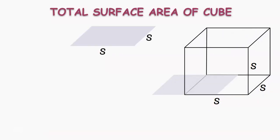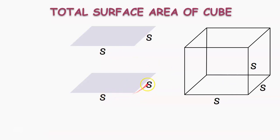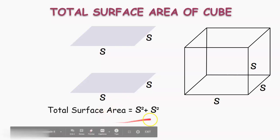So the area of each face would be S into S, that is S square, and the other face also S into S, which is S square. Therefore, by adding these two areas, we get S square plus S square.